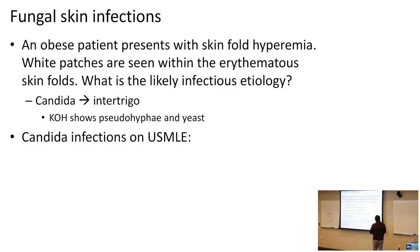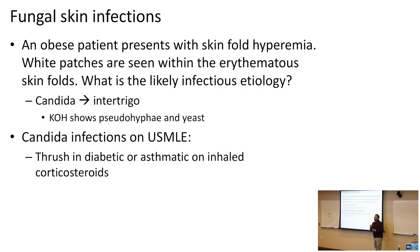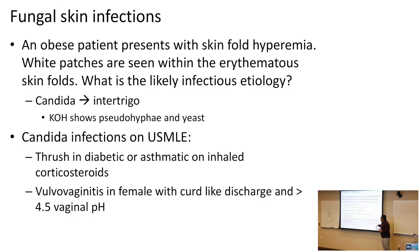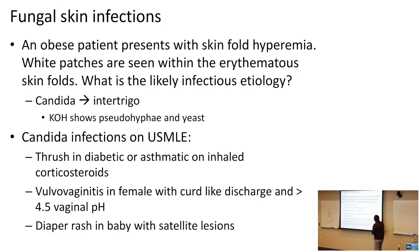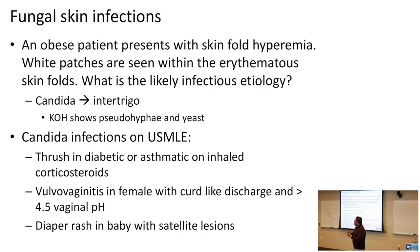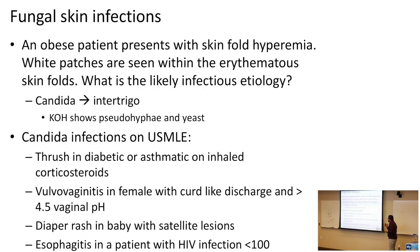Let's synthesize all candidal infections for the USMLE. Oral thrush occurs in diabetics or asthmatics on inhaled corticosteroids. Vulvovaginitis in a female presents with curd-like discharge and increased vaginal pH — that's candida affecting the reproductive tract. A diaper rash in a baby with satellite lesions indicates candidal diaper infection; a pediatrician should add antifungal coverage alongside zinc oxide cream when satellite lesions are present. Esophagitis in an HIV patient is also caused by Candida.